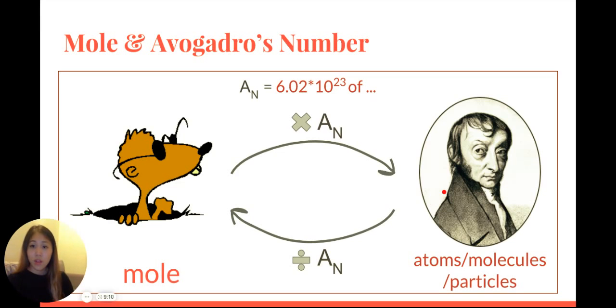Previously, we learned that converting between moles and Avogadro's number converts from moles to the number of things like atoms, molecules, or particles. We multiply by Avogadro's number, and when we go the other way, we divide by Avogadro's number.